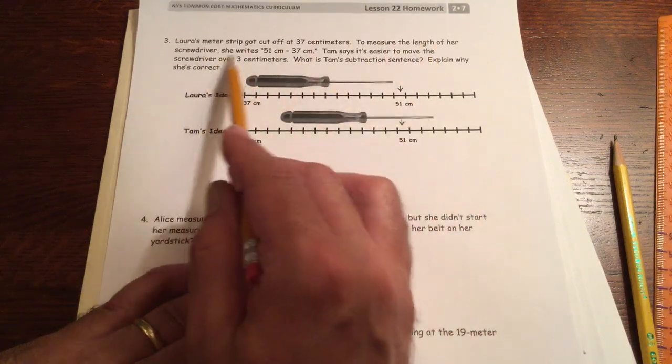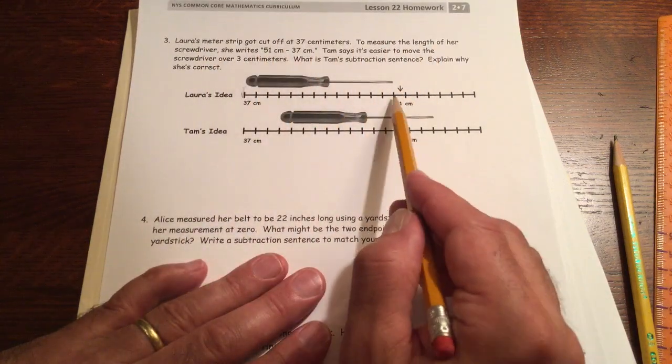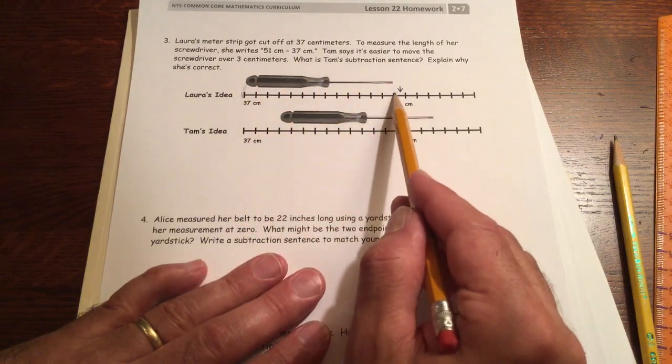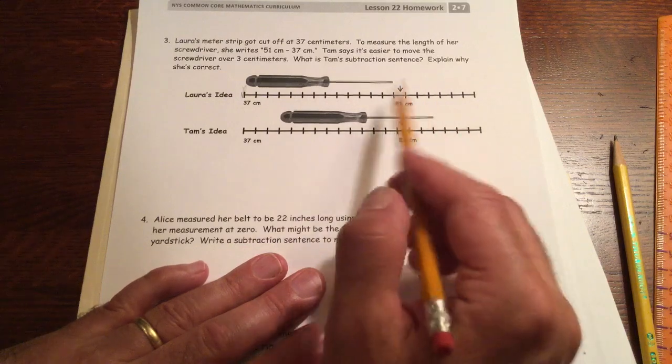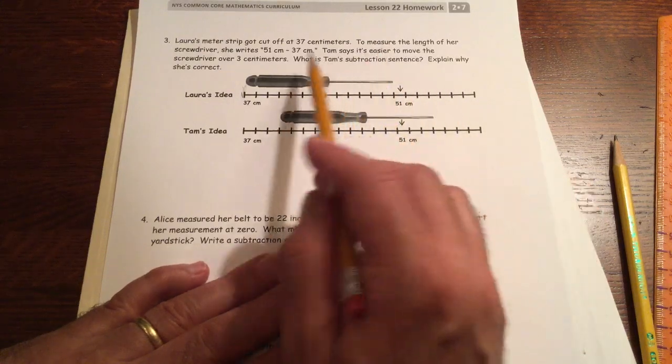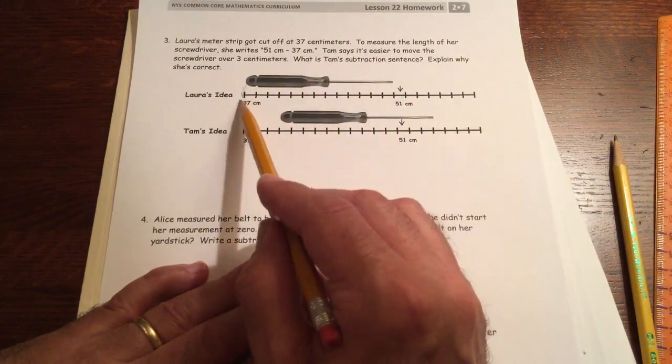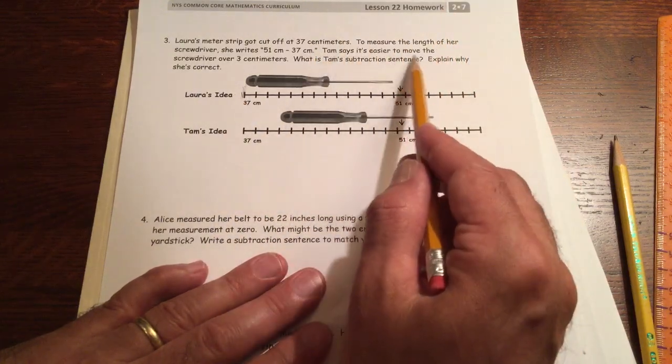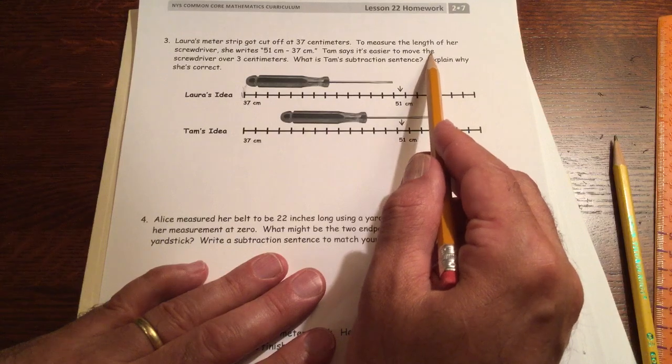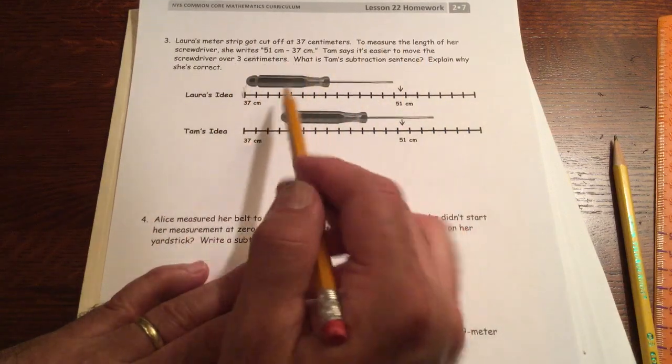To measure the length of her screwdriver, she writes, well, okay, I'll start it here at the 37 and it goes to about 51. So I'm going to call it 51. So I'll subtract the 37 from the 51. And Tom says it's easier to move the screwdriver over three centimeters.